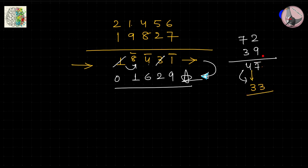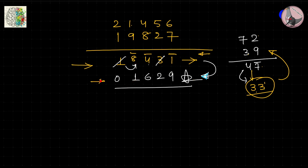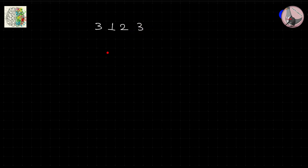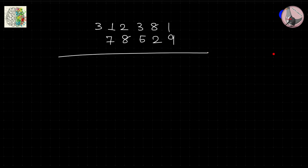Simple example: 72 minus 39. Left to right: 7−3=4, 2−9=minus 7 so write 7̄. Now convert 4 7̄: reduce 4 to 3, and 10 minus 7 = 3. Answer: 33. Check: 72 minus 39 = 33. The goal is to go from left to right in one pass — first writing bar notation, then immediately converting in the same pass once you're practiced enough.